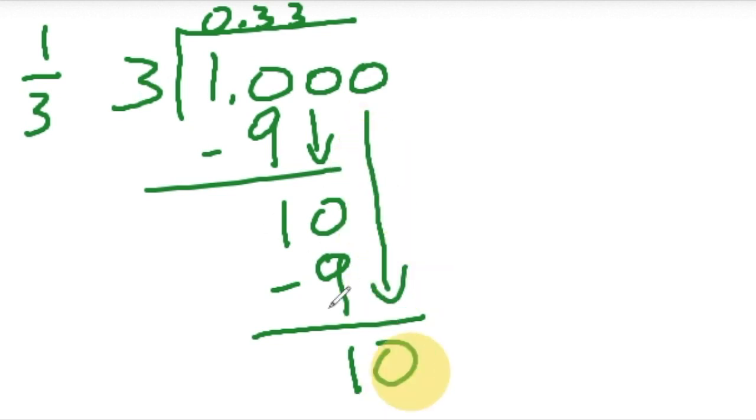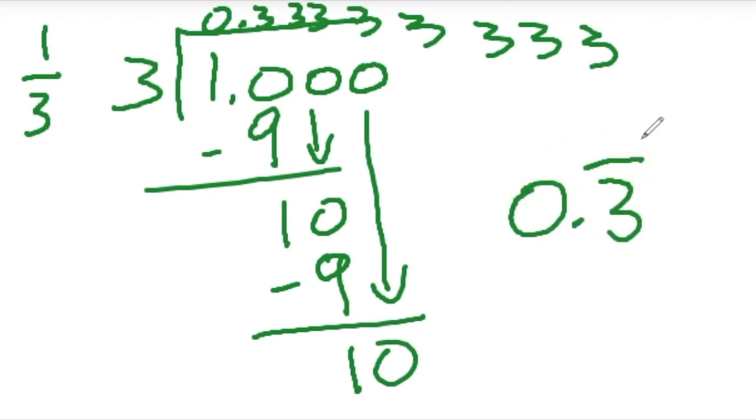And look, it's going to just keep going on forever. Bring down the zero. 3 goes into 10 three times. So this is going to be 3, 3, 3, 3, 3, 3 forever. And that's why we would just call this 0.3 with a bar on it, because the number three repeats.